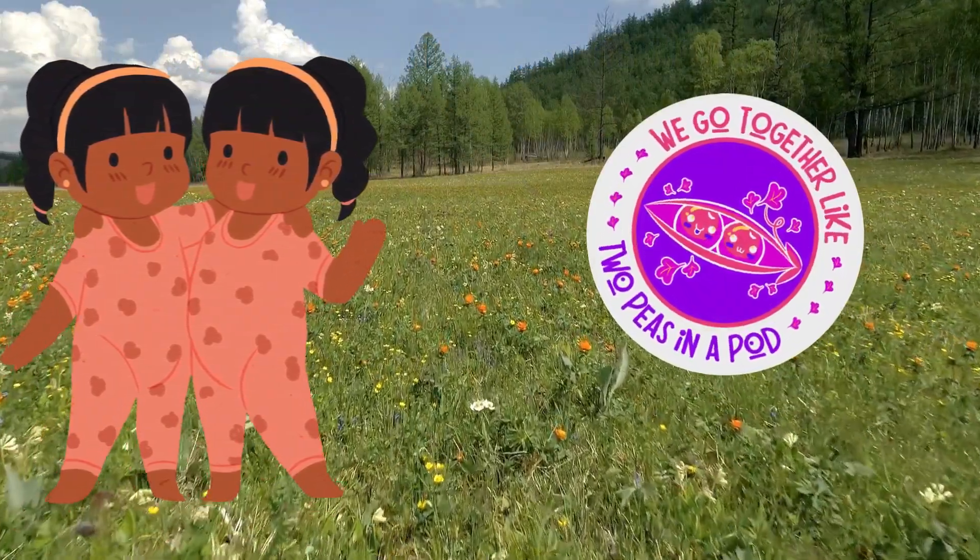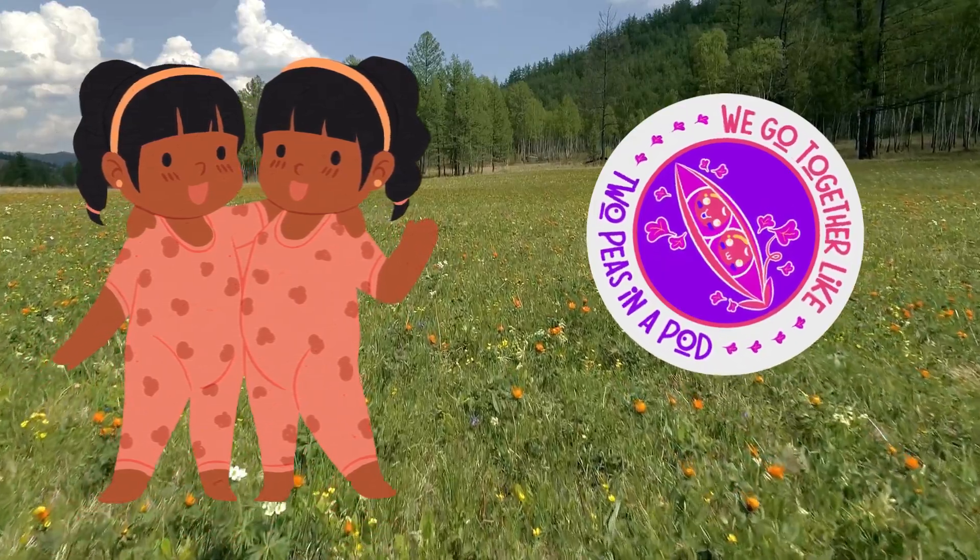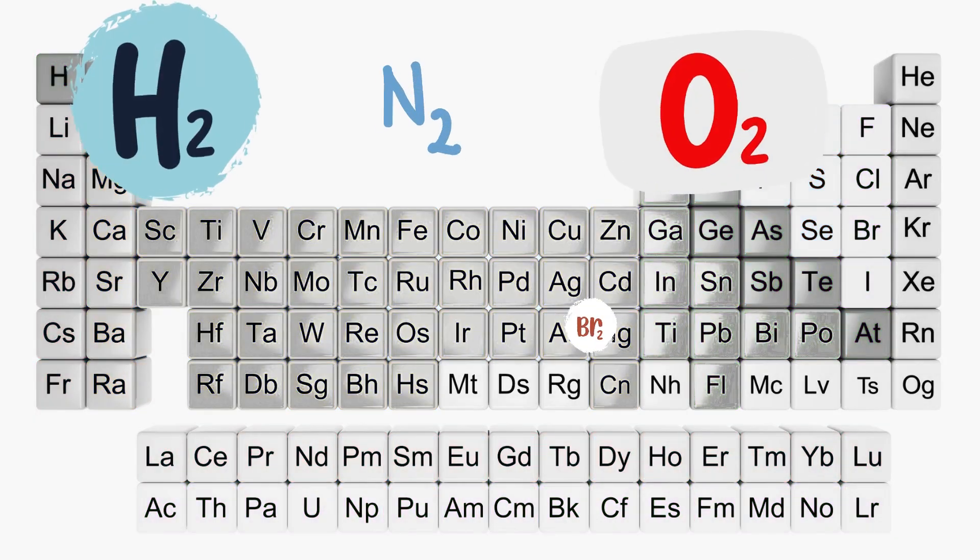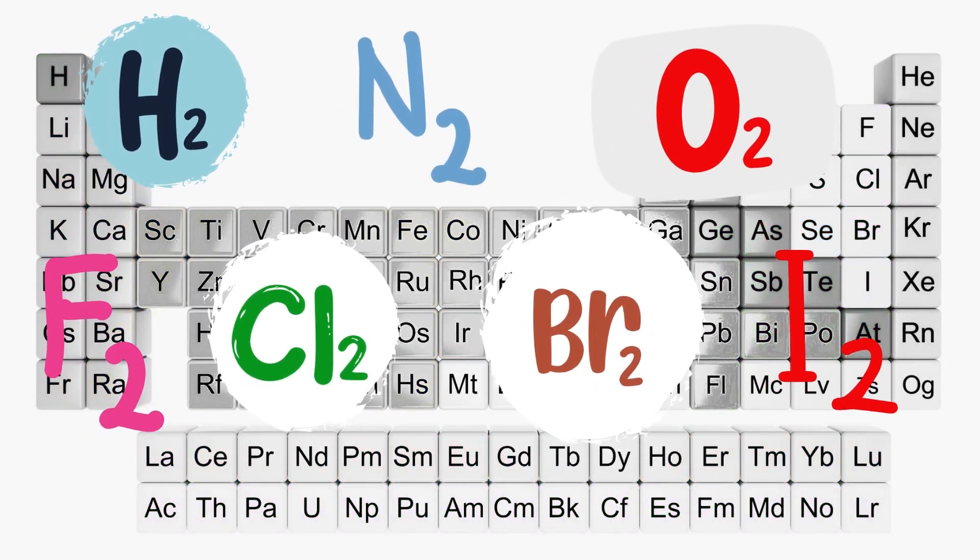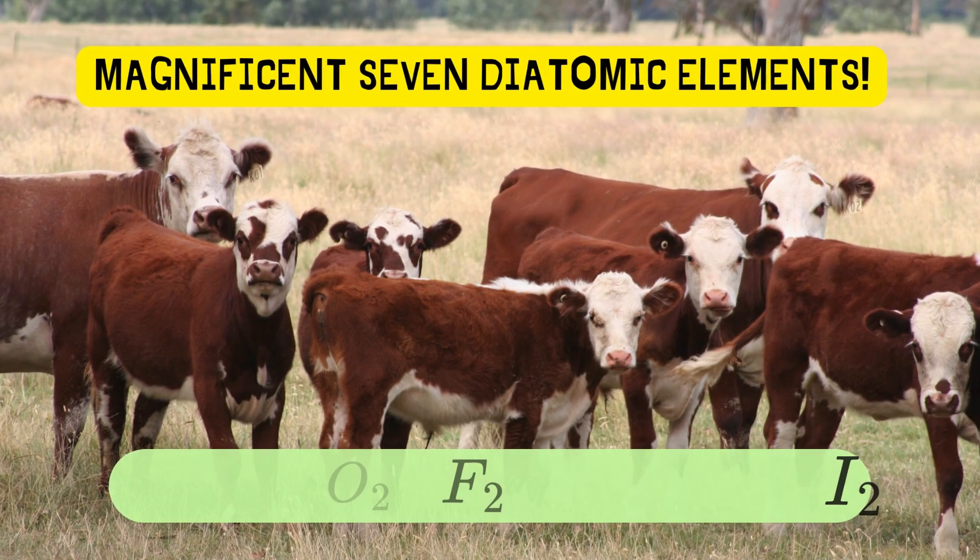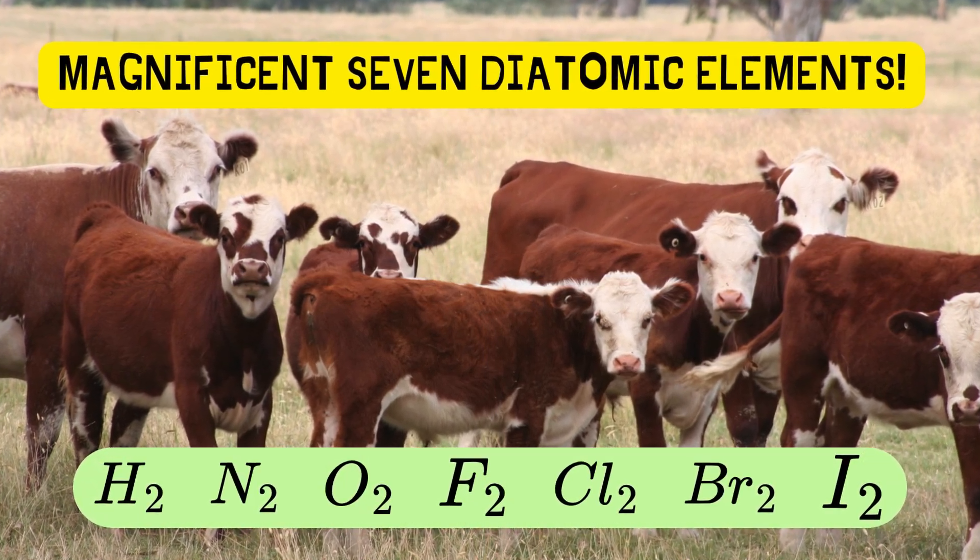They are like identical twins sharing a close bond. Which are the diatomic elements? Hydrogen, nitrogen, oxygen, fluorine, chlorine, bromine, and iodine. They are our magnificent seven diatomic elements.